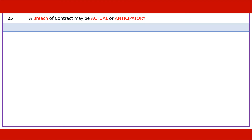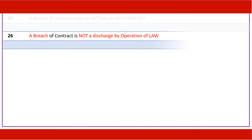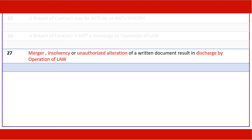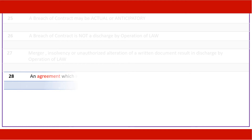A breach of contract may be actual or anticipatory. A breach of contract is not a discharge by operation of law. Merger, insolvency, or unauthorized alteration of a written document result in discharge by operation of law.